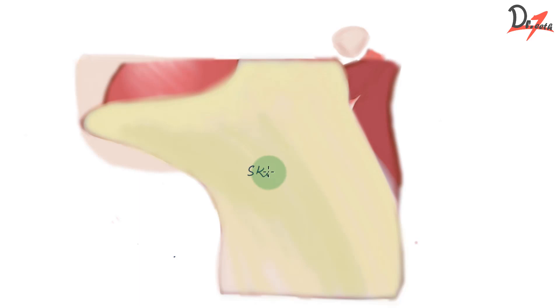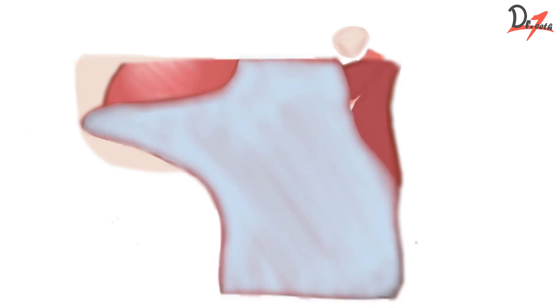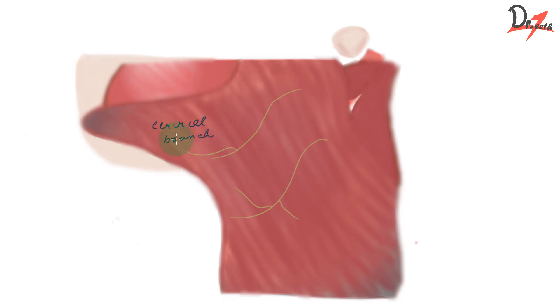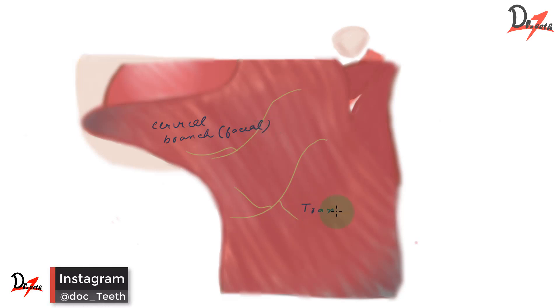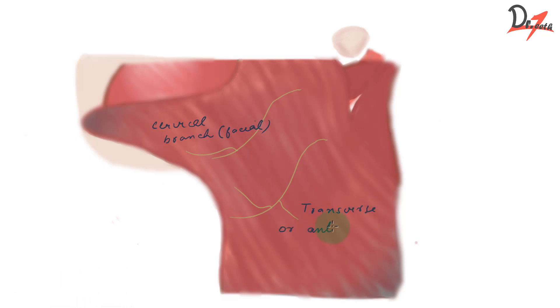First of all, this is our skin. When we remove that, we have the superficial fascia. This superficial fascia contains the platysma muscle, and we have two nerves: the cervical branch of the facial nerve, and the transverse or anterior cutaneous nerve of the neck — specifically, the ascending branch of this nerve.